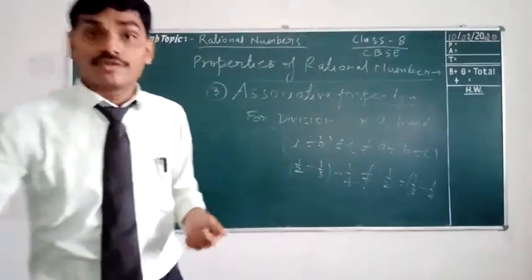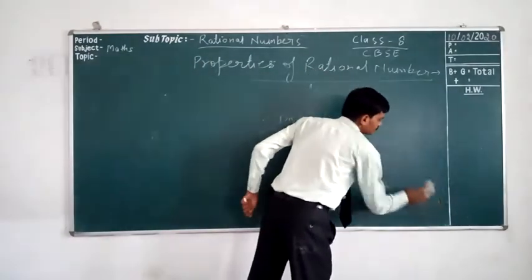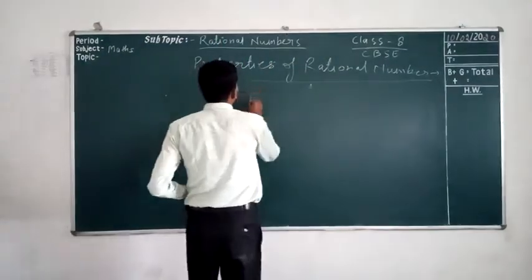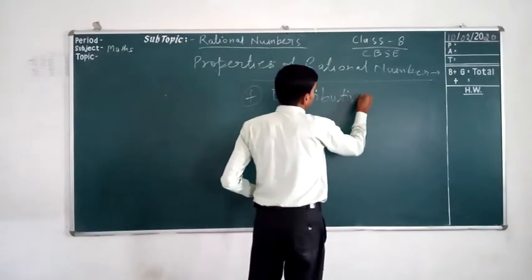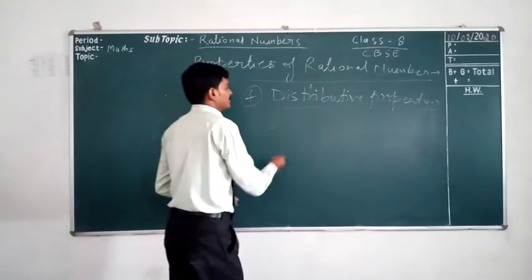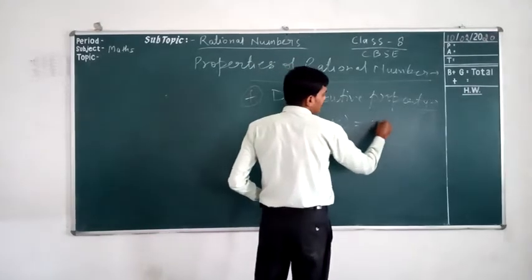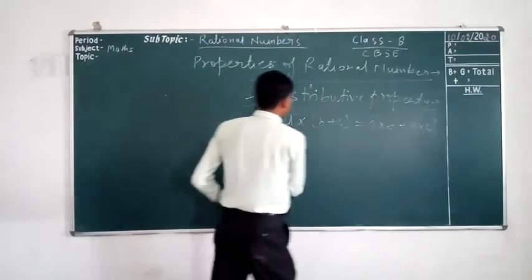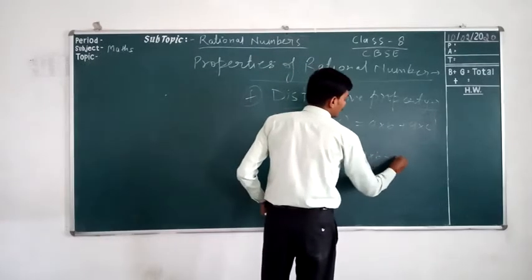So this is all about the associative property. Now, come for the distributive property. The fourth property is the distributive property. That is, A × (B + C) = A × B + A × C.